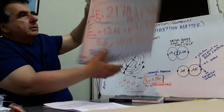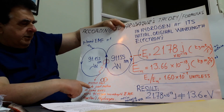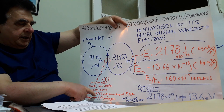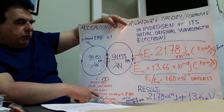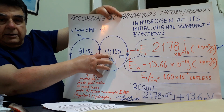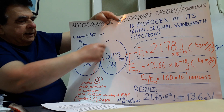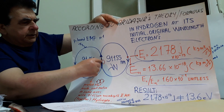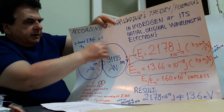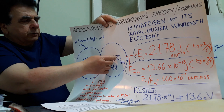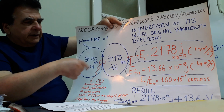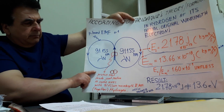Like this: the proton made joint motion on the same axis with a 91.155 nanometer wavelength electron motion form — for instance — together they made a hydrogen atom. This is the electron motion form; this is the proton. They made joint motion, and always the electron motion form with 91.155 nanometer wavelength is at its first cycle, N equals 1.